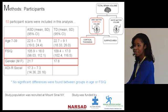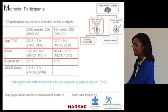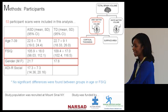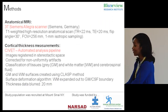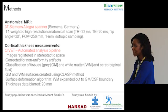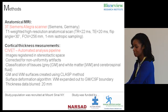We used a cross-sectional design with 53 participants: 28 with ASD and 25 typically developing individuals. The age span was 7 to 39 years, and both groups were matched on age and full-scale IQ. We used a three Tesla magnet, and the analysis was run through an automated pipeline called Civet, generated by one of our collaborators.